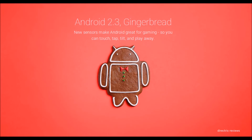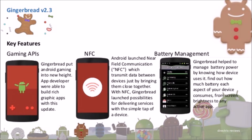Froyo introduced the Dalvik JIT compiler, which delivered up to 5x performance improvement in CPU-bound code. The next generation of Android was Android 2.3 Gingerbread, with key features including gaming APIs, NFC, and battery management.